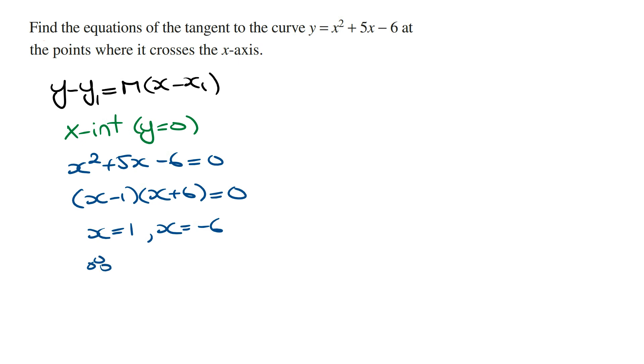And so therefore the coordinates of the x-intercepts are going to be (1, 0) and (-6, 0), giving us the points where the curve crosses the x-axis. And so we can call this x₁ and y₁, and this one x₁ and y₁.